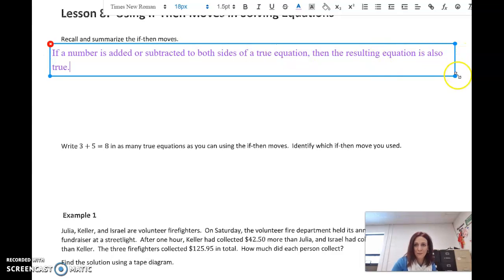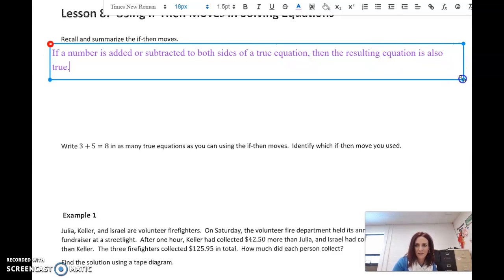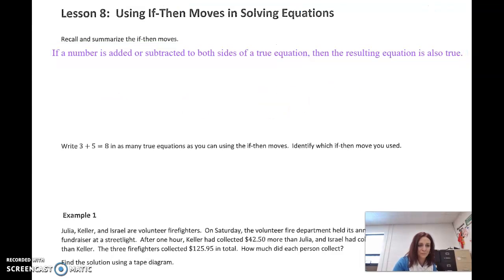So what do we mean by that? If this is a true statement, if a equals b, and those are symbols representing numbers like 5 equals 5, then a plus c has to equal b plus c. Notice that if we add a number, because that c represents a value, if we add it to both sides, then this is also true.